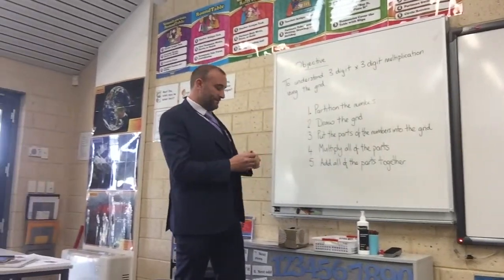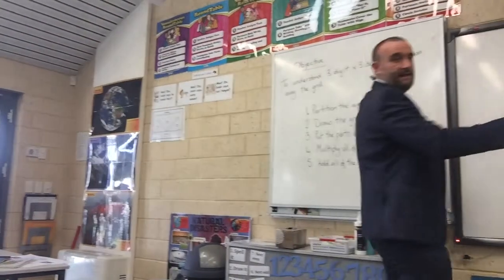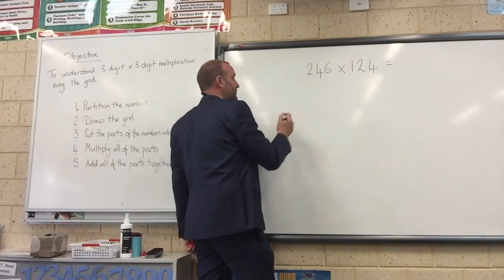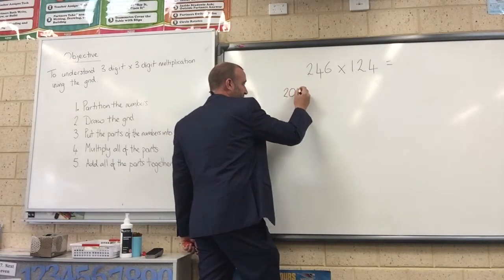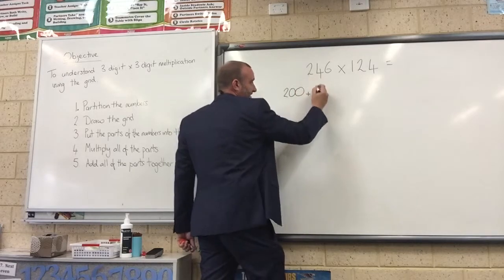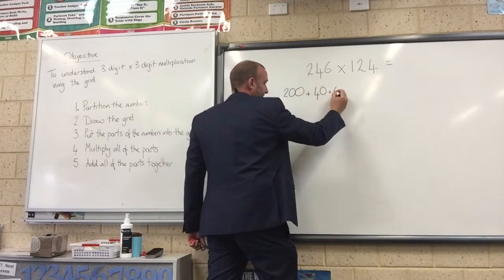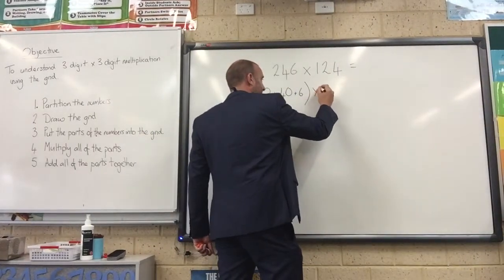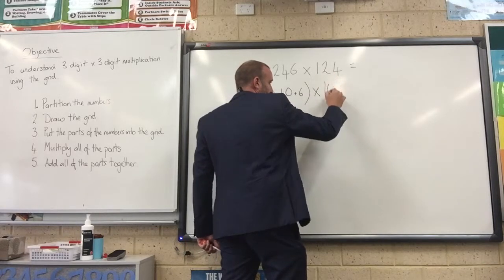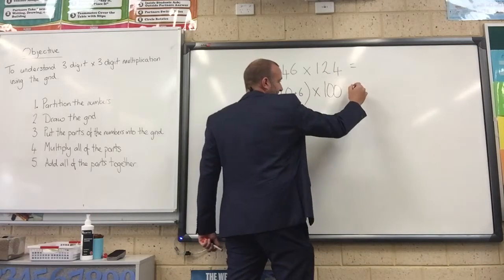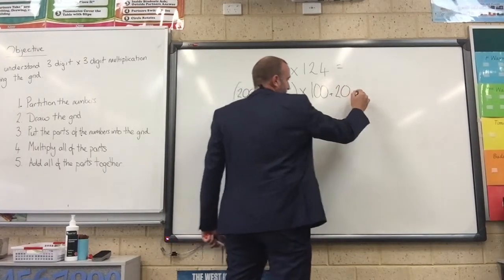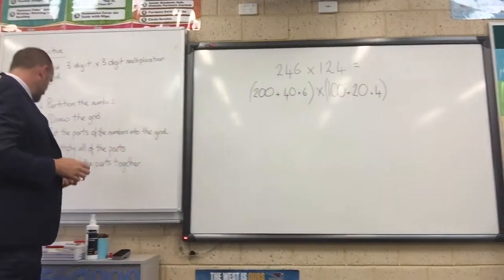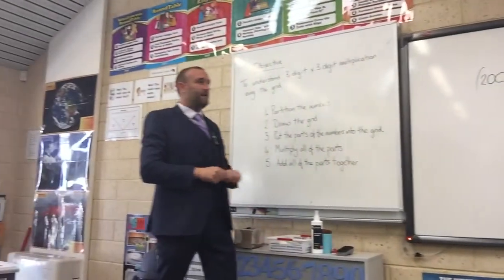Let's move on to our first step: partition the numbers. Here is my problem already written up. We've got 246 — there are 2 hundreds, so that's 200, plus 4 tens which is 40, plus 6 units. We're multiplying that by 124: there is 100, 2 tens which is 20, plus 4 units. Pause the video now and partition your number.